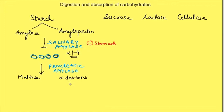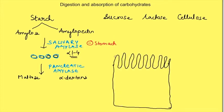Absorption of carbohydrates occurs only in the form of monosaccharides, so further digestion occurs by enzymes present on the apical membrane of enterocytes. This diagram shows an enterocyte where the apical membrane is thrown into folds. This apical membrane consists of many enzymes which break down disaccharides to monosaccharides. Digestion up to the disaccharide stage takes place in the lumen of the intestine, but further digestion occurs at the membrane of the enterocyte.